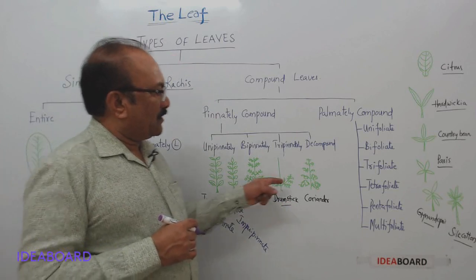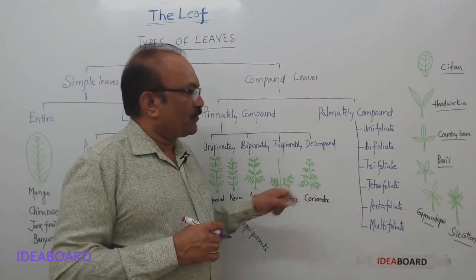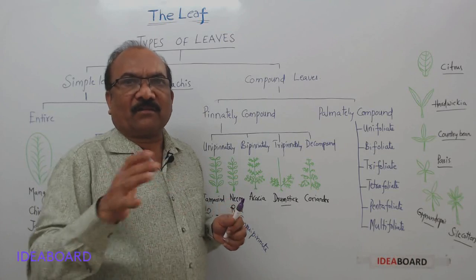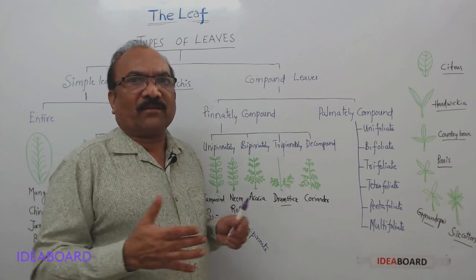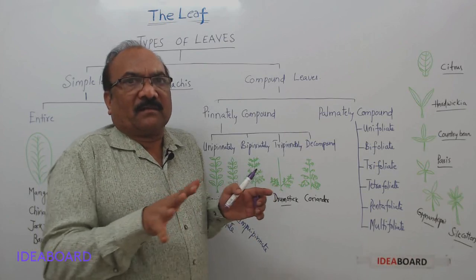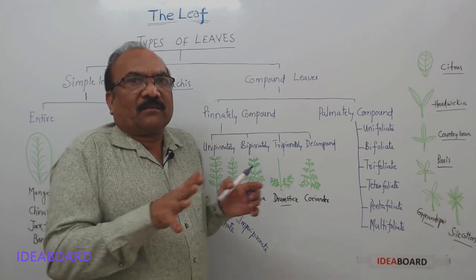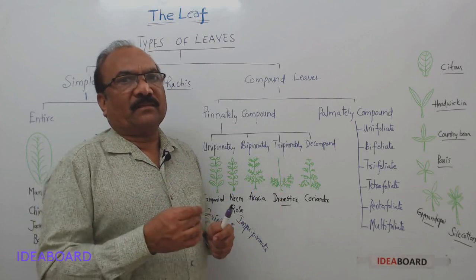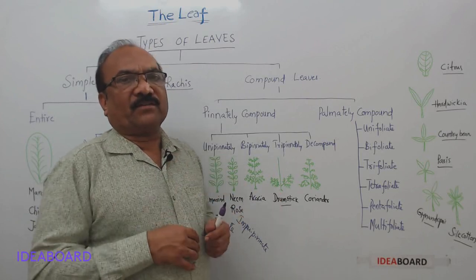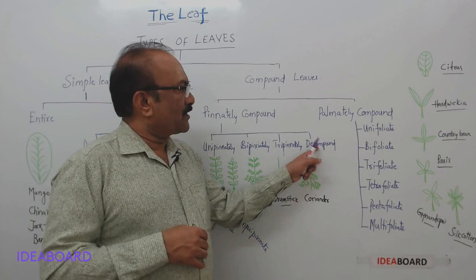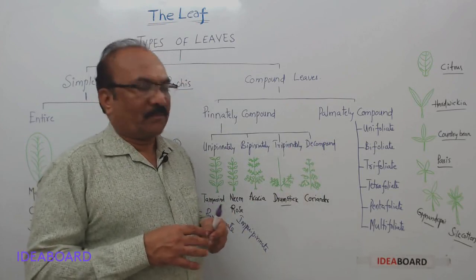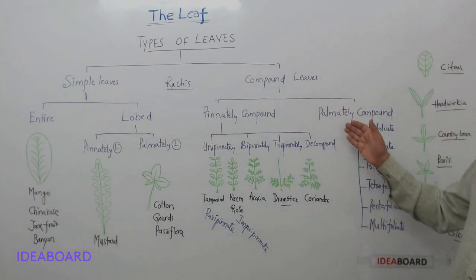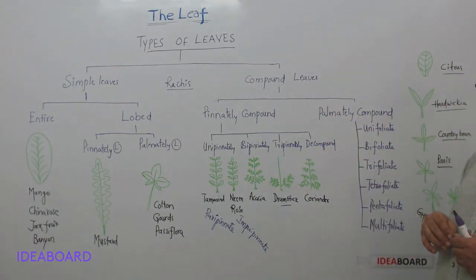For coriander leaves, it is not possible to count the number of rachii as they are produced unevenly, so coriander is an example of a decompound leaf. Now let us look at palmately compound leaves, where there is no rachis and the leaflets are arranged above the petiole.